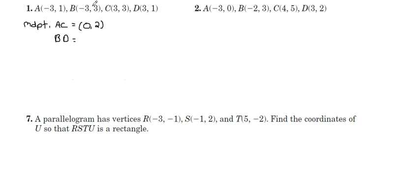For BD, 3 plus 1 is 4, 4 divided by 2 is 2. That's our midpoint y coordinate. Negative 3 plus 3 is 0, 0 divided by 2 is 0. So we've established that the midpoints are the same. Now we want to verify that the distances,